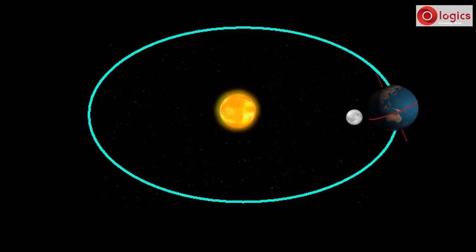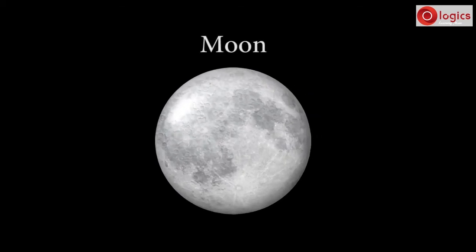As Earth orbits the Sun, observe a bright object near Earth. Let's learn about this object, which is the Moon.